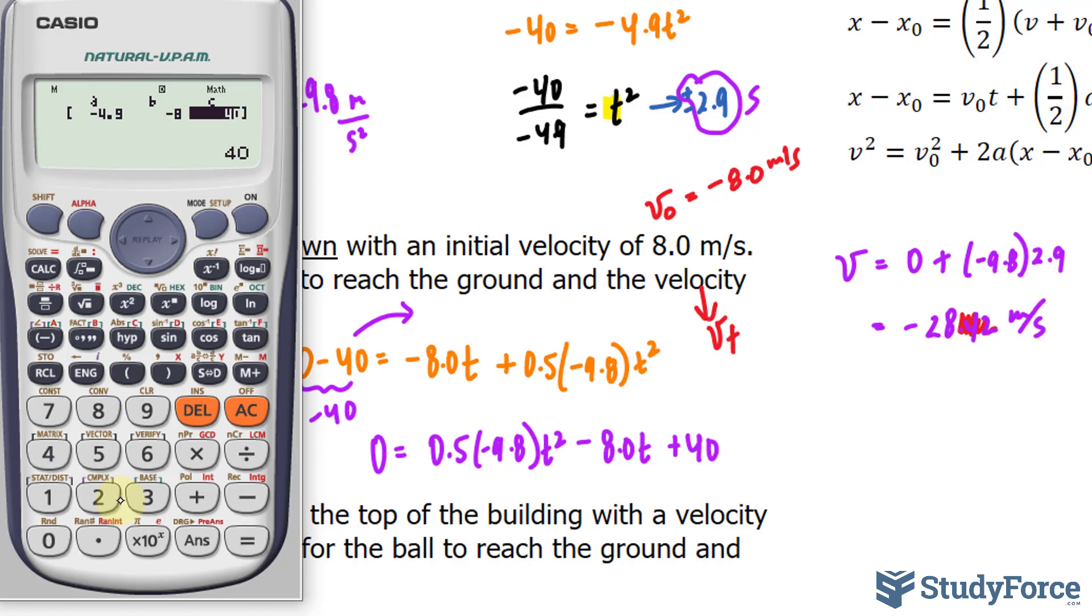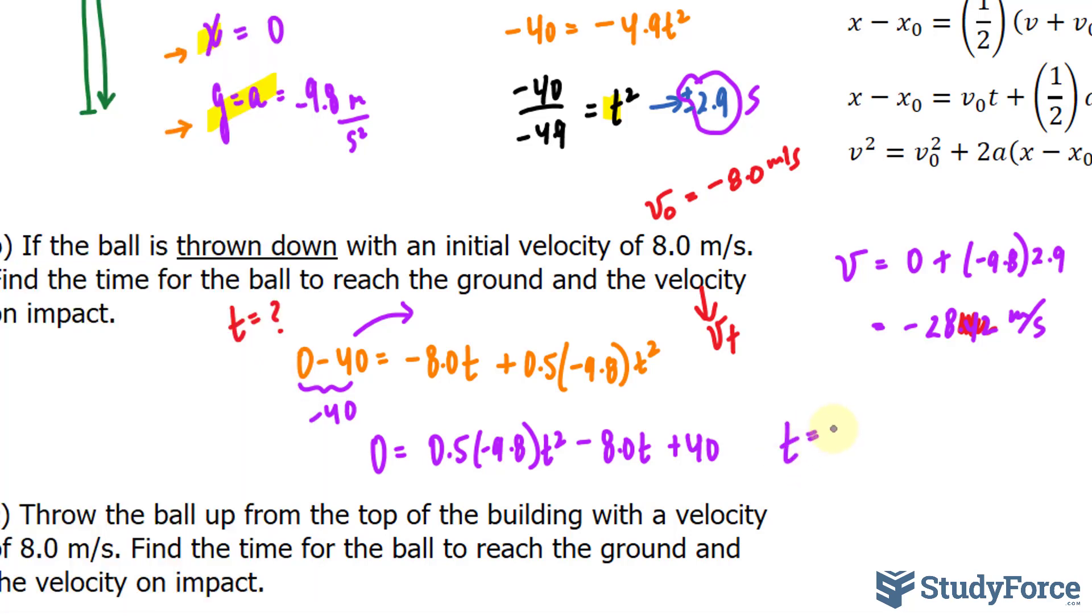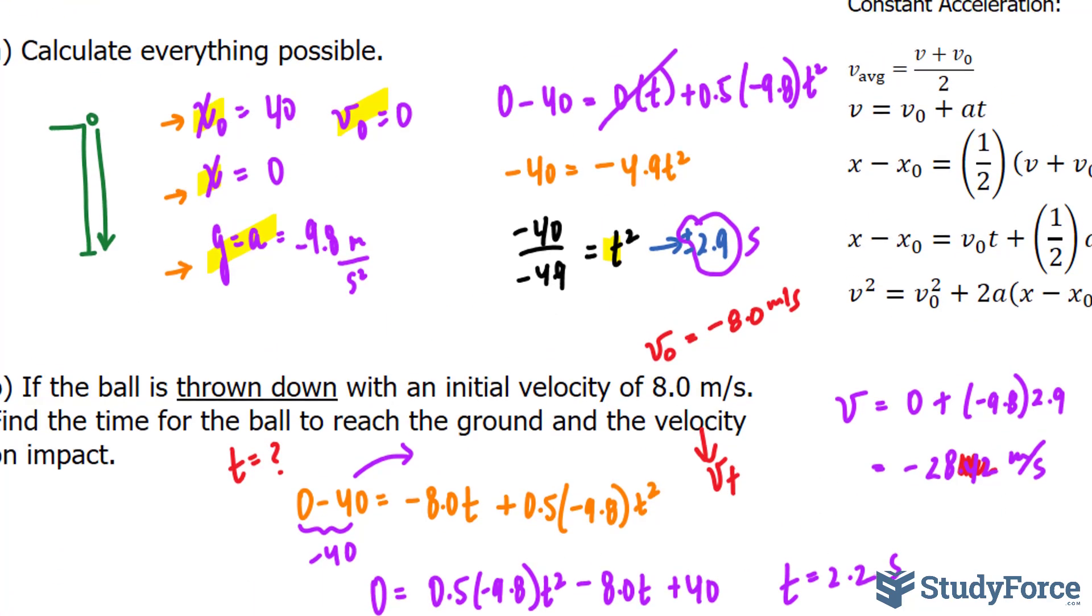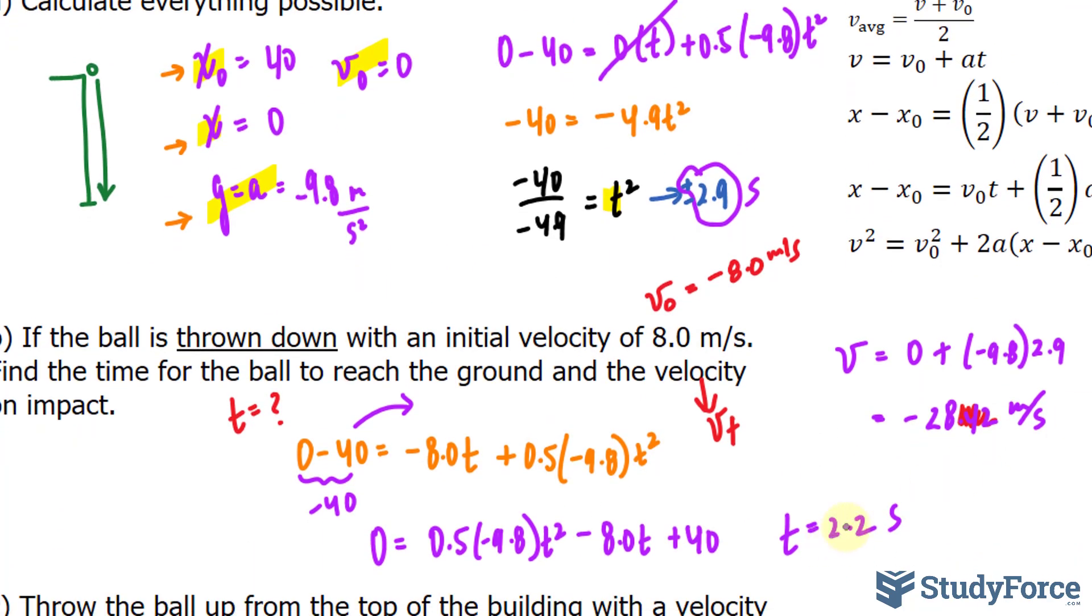And from this, we should be able to get two t values. One of them is 2.1 or 2.2. And the other is negative, which I'll just ignore. So the time is 2.2 seconds. If you throw it at an initial velocity of 8, then you see the time. There's a big time difference between the other question where the velocity was 0. 2.2 versus 2.9.